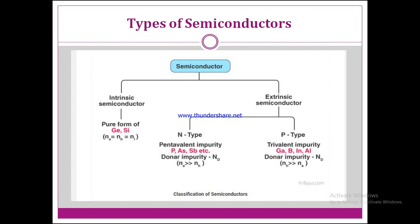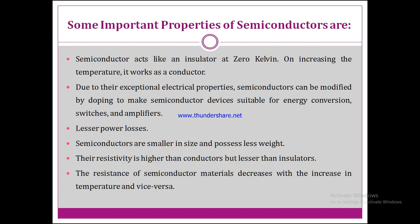Hello everyone, welcome to the new session of this unit on types of semiconductors. In the last lecture we discussed semiconducting properties. The semiconductor acts like an insulator at zero Kelvin, but on increasing the temperature it works as a conductor. Due to their exceptional electrical properties, semiconductors can be modified by doping to make semiconductor devices suitable for energy conversion, amplification, and other applications. Semiconductors are smaller in size and possess less weight as well.